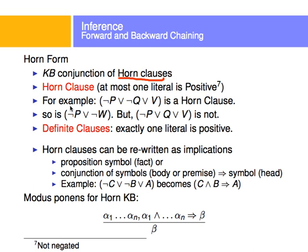For example, not P or not Q or V is a horn clause, assuming that a literal is positive if it doesn't have a not in front of it. Also, not P or not W is also a horn clause, because horn clauses say that at most one literal is positive — here none of them are, but at most one complies. However, if you have two positive literals, then this is not a horn clause.